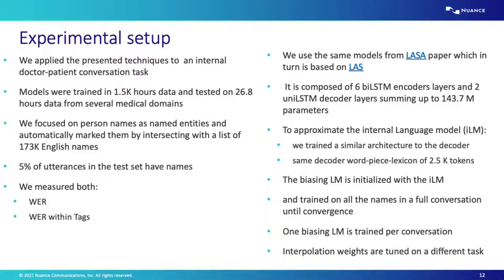To approximate the internal language model, we trained a similar architecture to the decoder of the end-to-end model, using the same word-piece lexicon of 2,500 tokens, trained on the same transcriptions as the end-to-end model. The biasing language models for named entity distribution were initialized using internal language model parameters, then trained on all names from a full conversation until convergence. We trained one biasing language model per conversation, and combined all scores — shallow fusion, contextual density ratio, end-to-end — using interpolation weights tuned on a separate adaptation task.